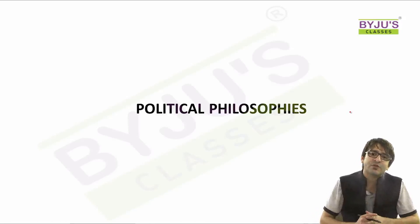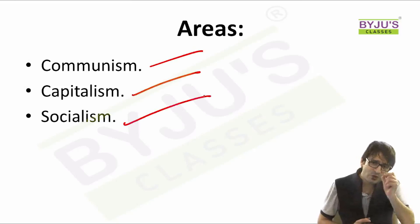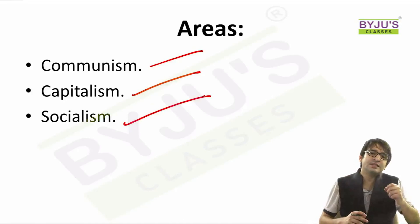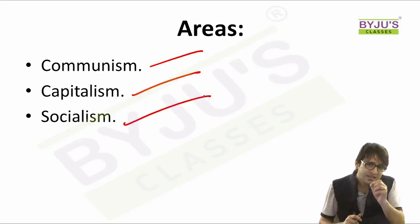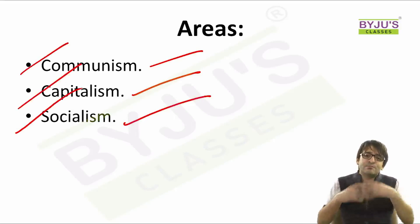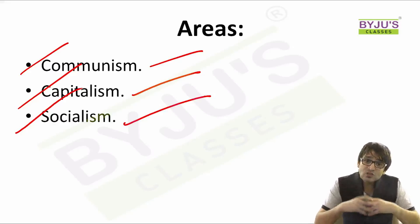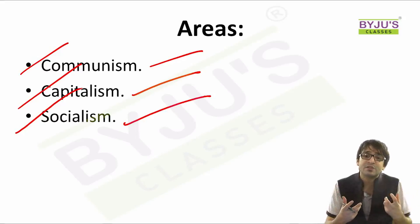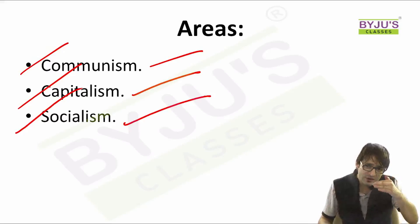Let us look at another area that is part of your syllabus: political philosophies such as communism, capitalism, and socialism. If you look at communism, the entire foreign policy of the United States after 1945 was focused on containing communism in the newly independent areas and regions of Asia and Africa. Understand these concepts — communism, capitalism, socialism — and their importance, significance, and role in shaping world history. Understand the difference between communism and socialism, and between communism and capitalism. The effects of all these political philosophies on world history and Indian history become your focus area.